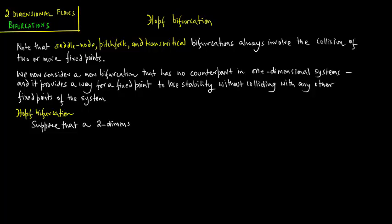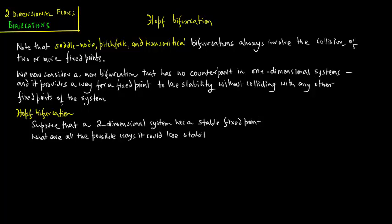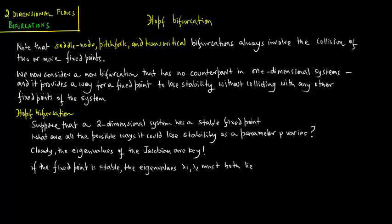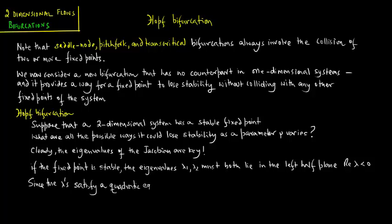Suppose that a two-dimensional system has a stable fixed point. What are all the possible ways it could lose stability as a parameter mu varies? Clearly, the eigenvalues of the Jacobian are key. If the fixed point is stable, the eigenvalues lambda 1 and lambda 2 must both lie in the left half plane where the real part of lambda is less than 0. Since the lambdas satisfy a quadratic equation with real coefficients, there are two possible values.